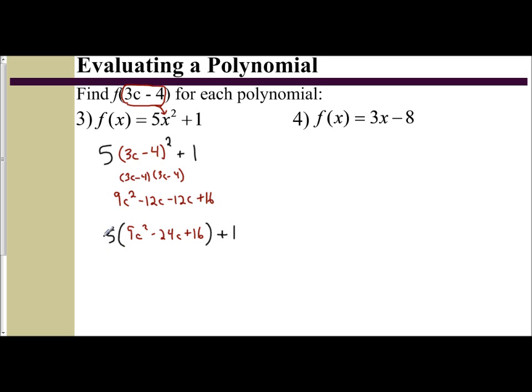Now I'm going to distribute and get 45c² minus 120c plus 80 plus 1. Combine your like terms and you get 45c² minus 120c plus 81.